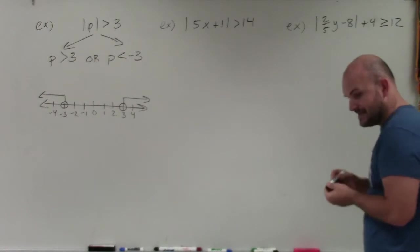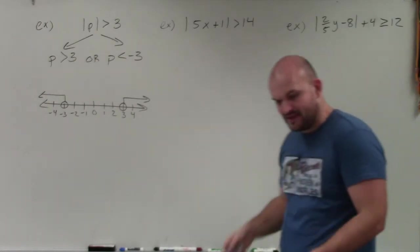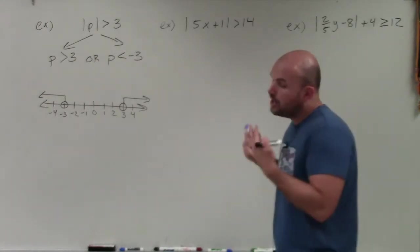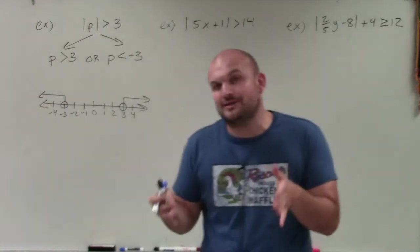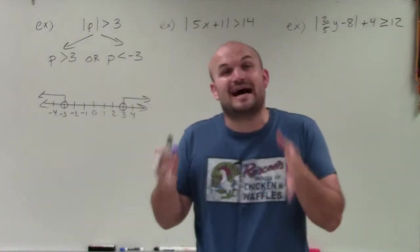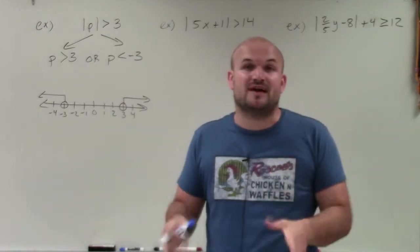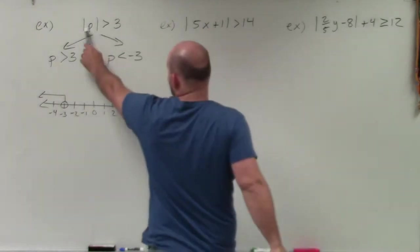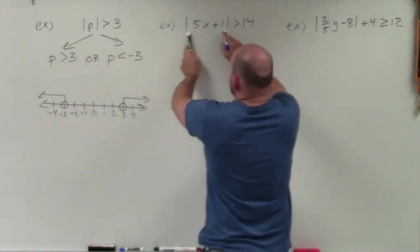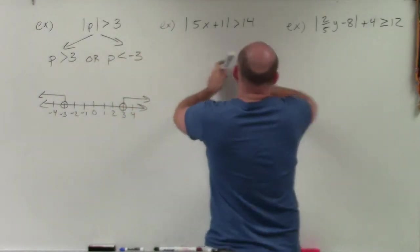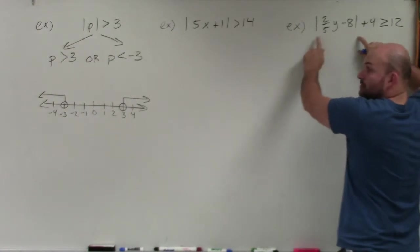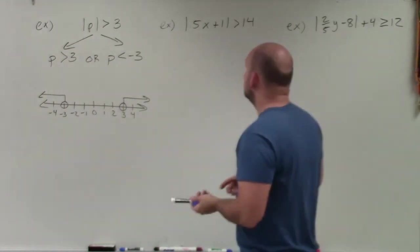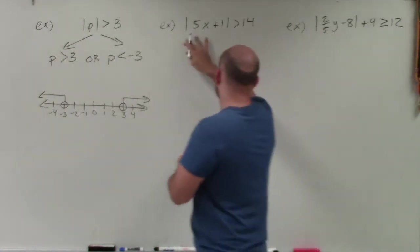Now in this next example, we're going to do the exact same thing — create our two cases. And the other important thing to remember: when you're creating your two cases, you have to make sure your absolute value is isolated. Here it's isolated, so I can create my two cases. Here it's isolated too, so I create my two cases. But here it's not isolated, so we're going to work on that before creating our two cases.